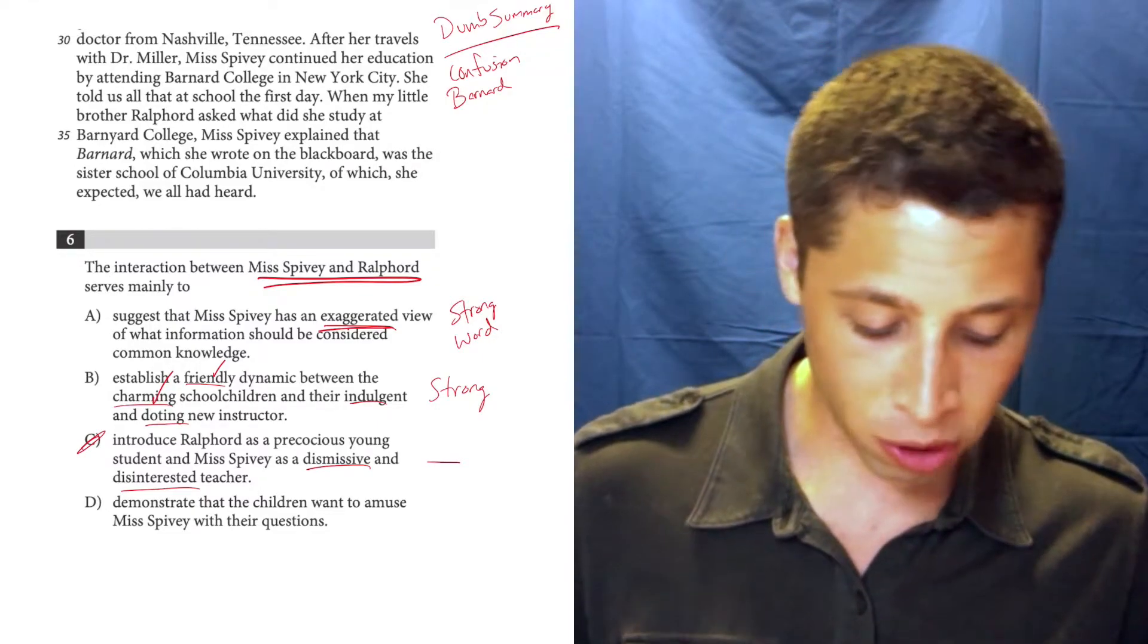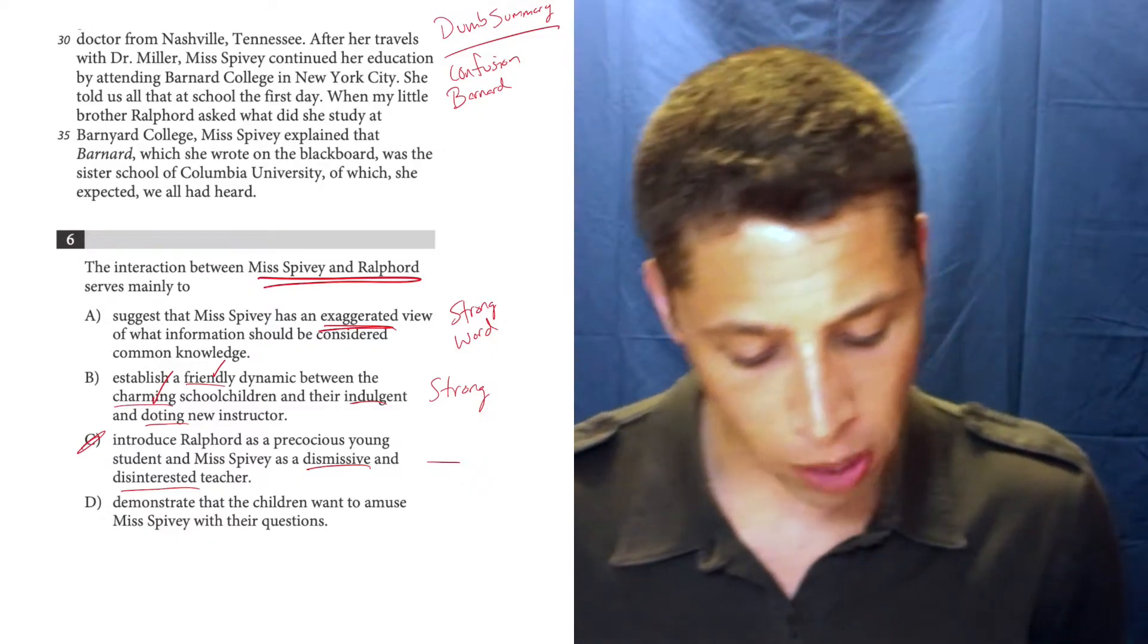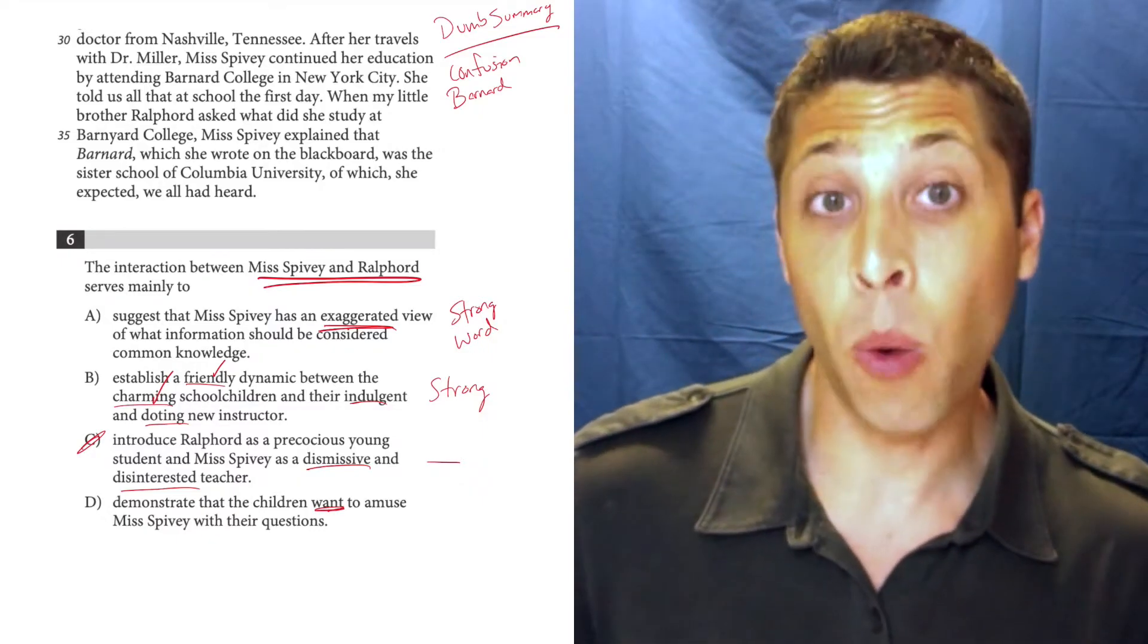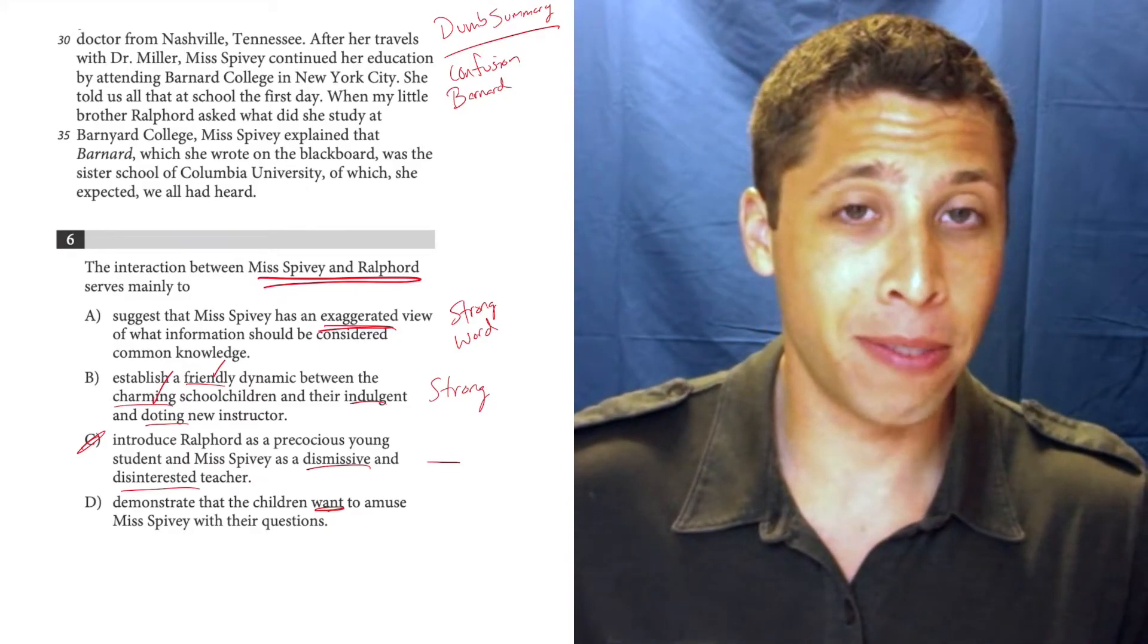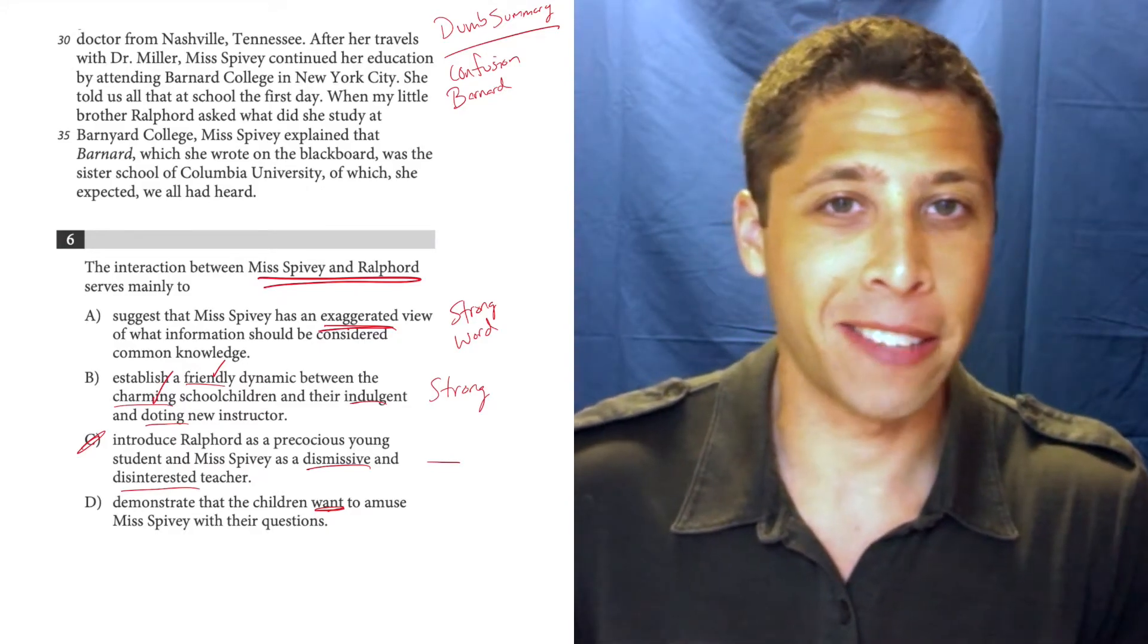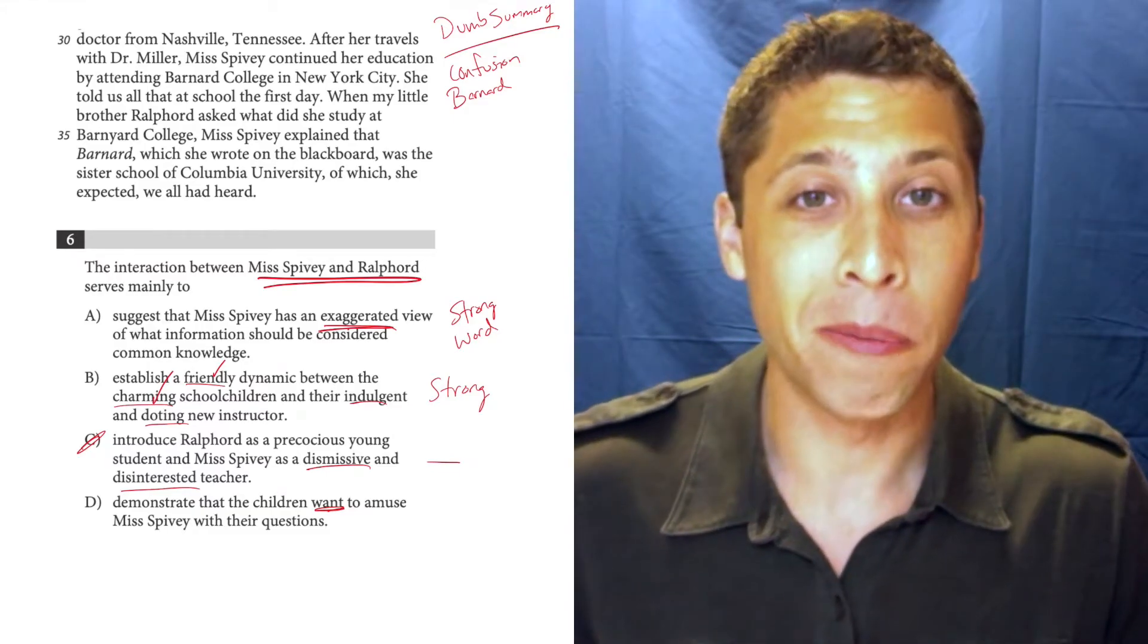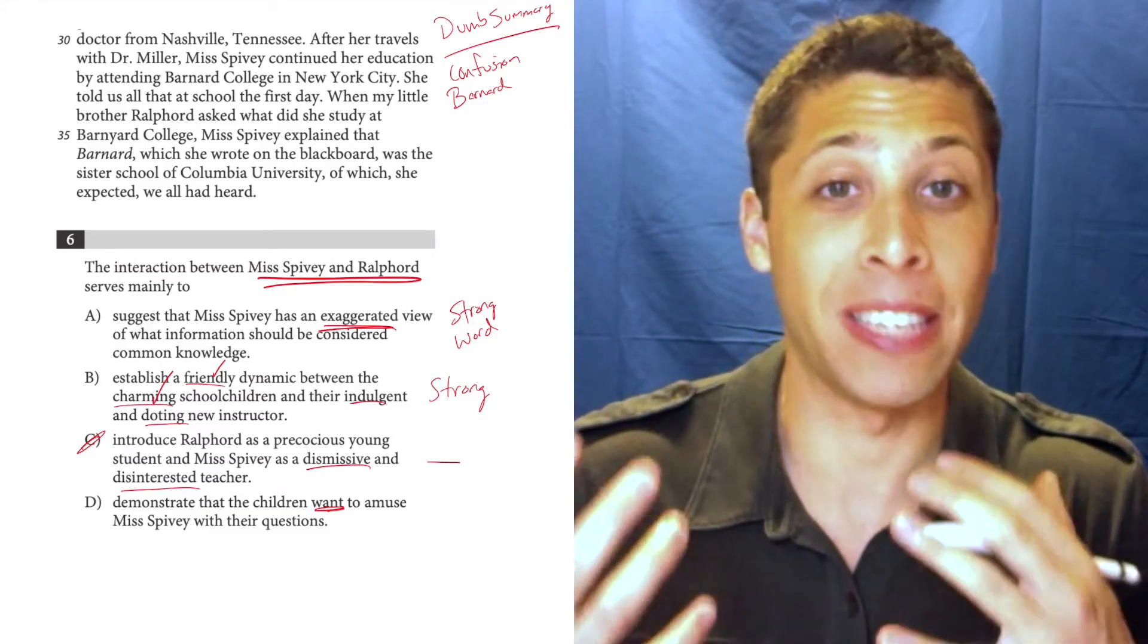D. Demonstrate that the children want to amuse Miss Spivey with their questions. Well, here the strong word is want. I really don't know what they want. Ralford is asking about the college, the college name. Like, I don't know what they want to do from that question. I just know that that's what he's asking.